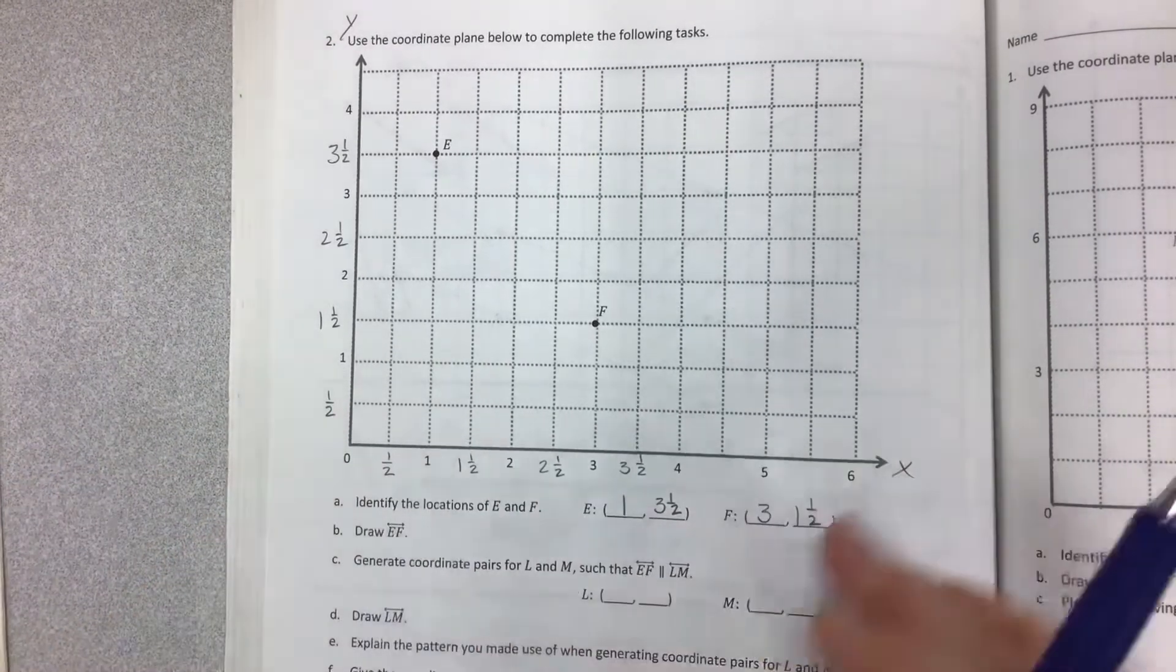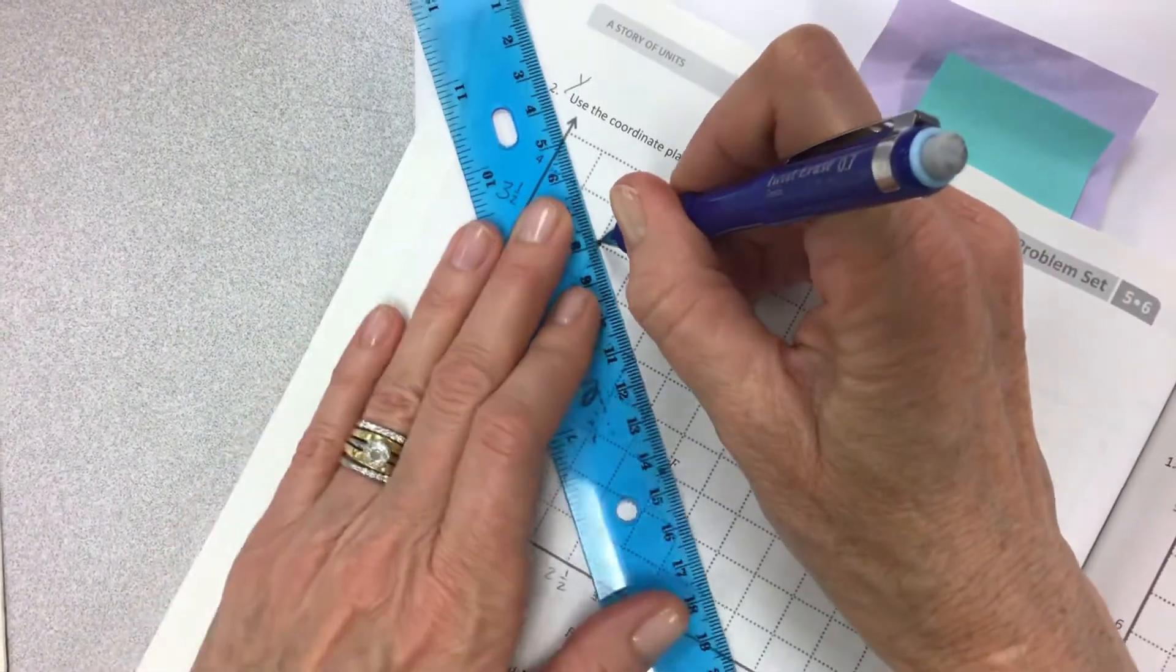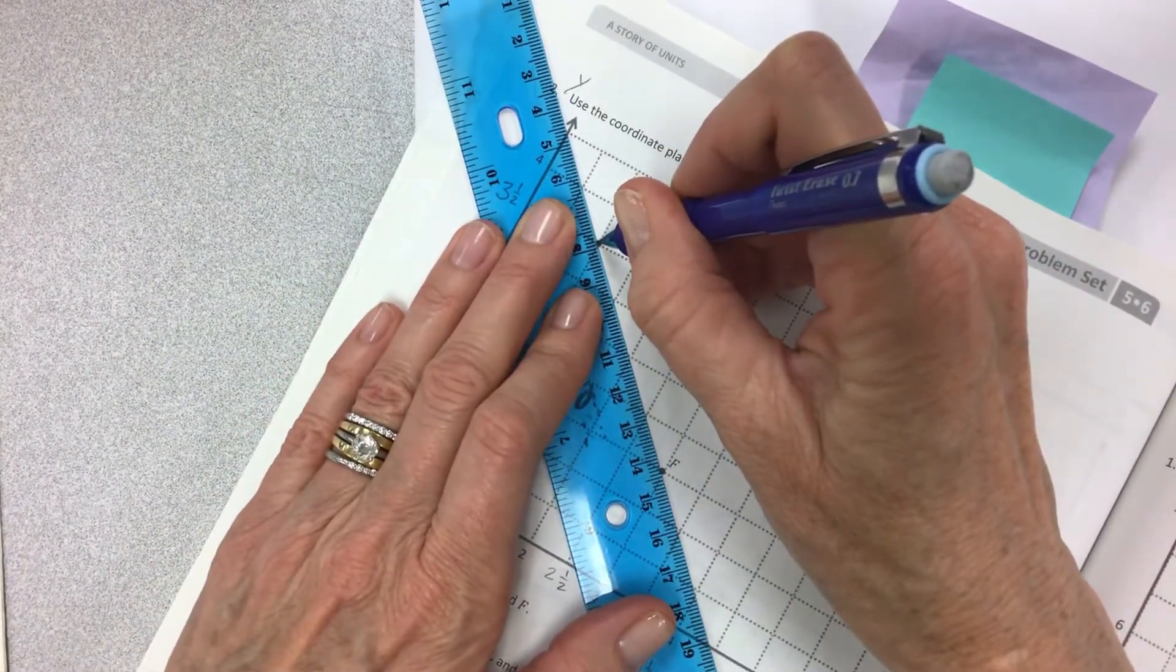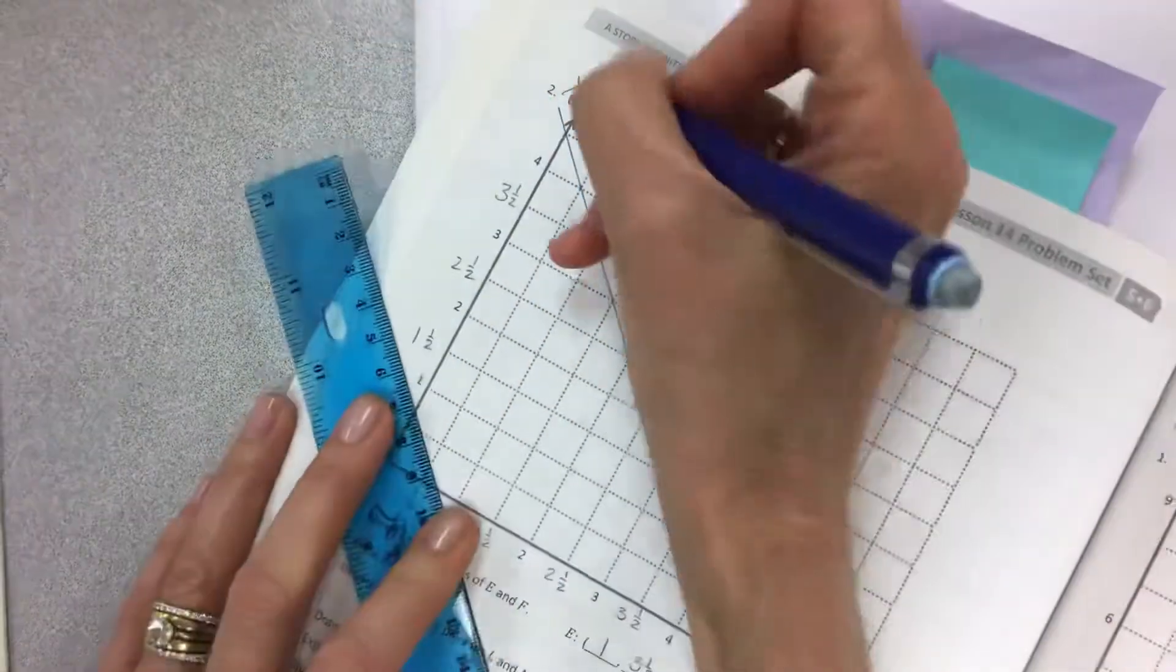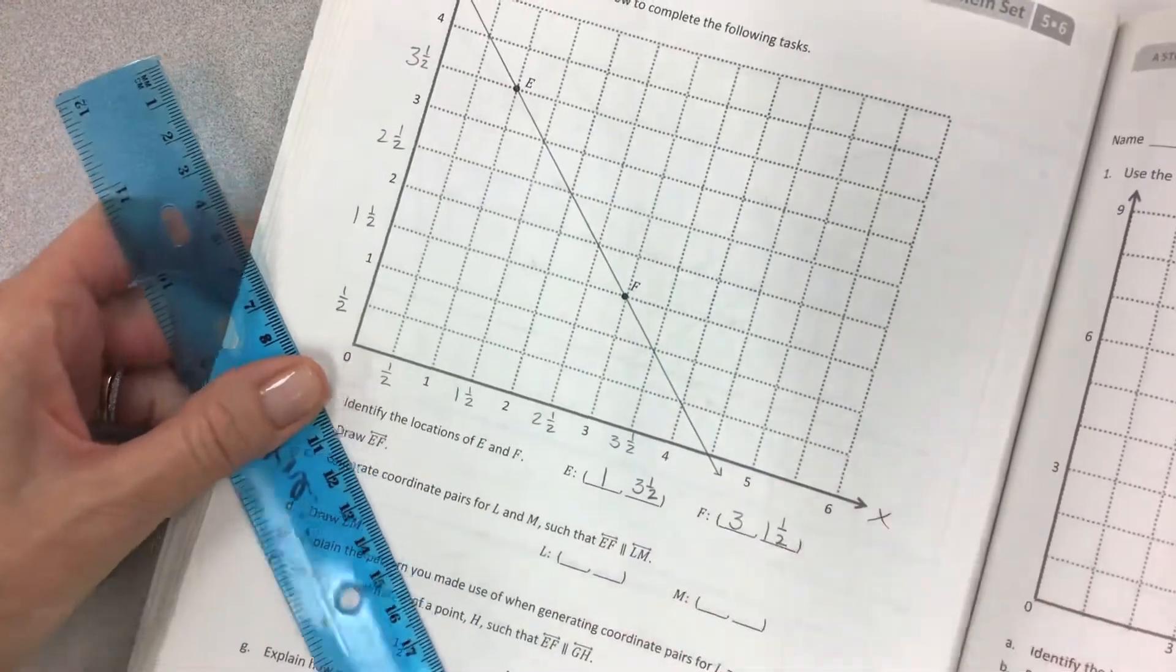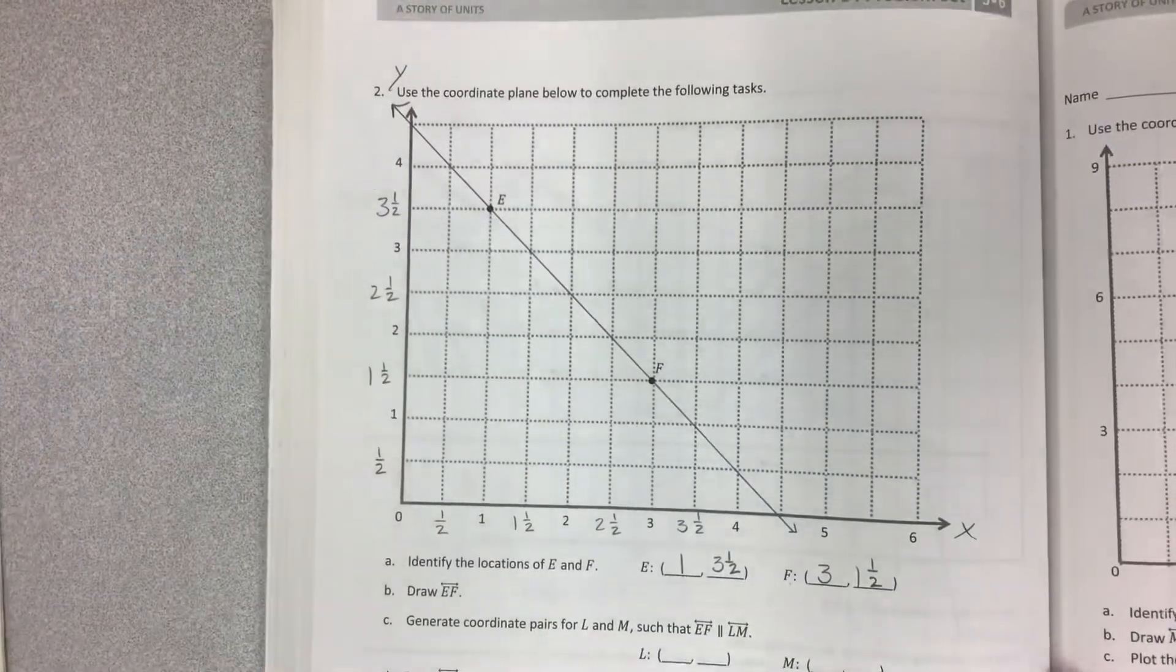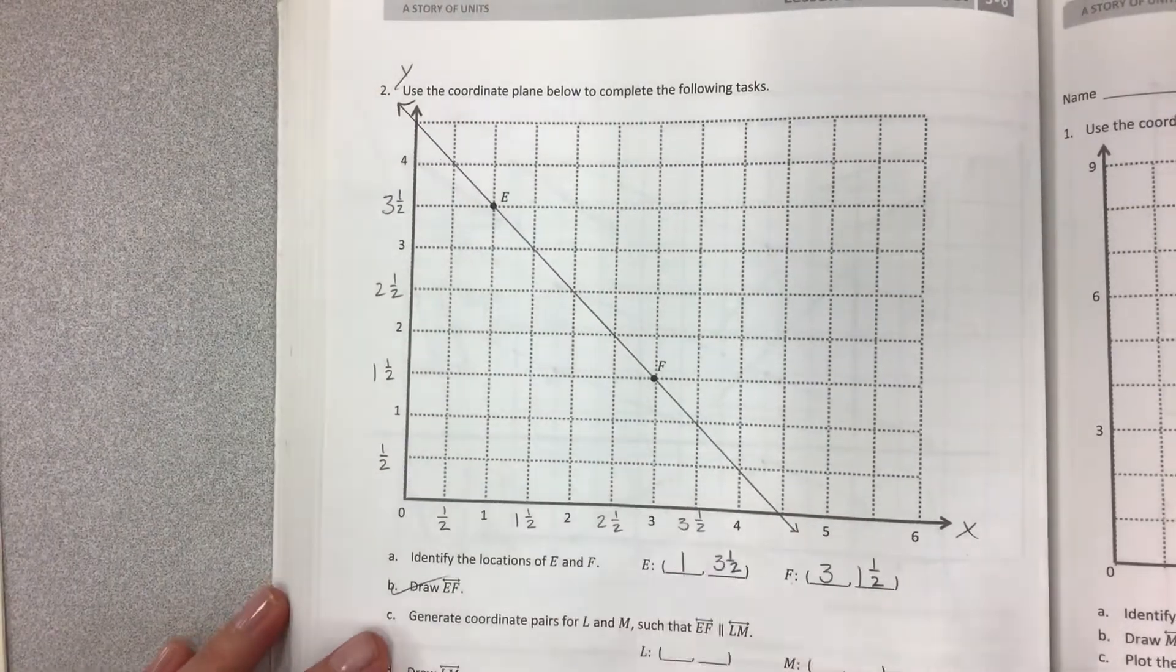Okay we drew our—we haven't drawn our line. Here we go. Draw the line. Notice that this line is going the opposite direction. We're usually drawing lines that go up. This looks like a bad sales report going downhill. Okay so we drew line EF.